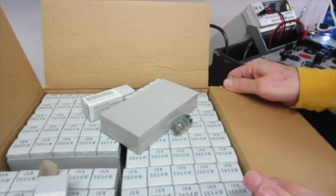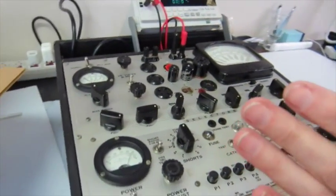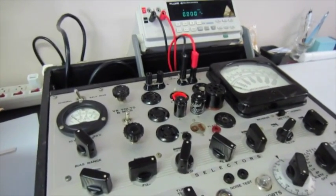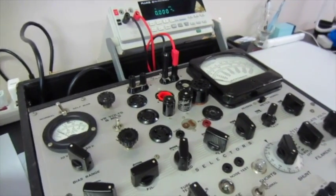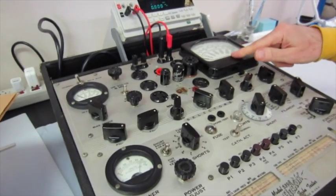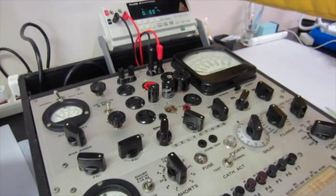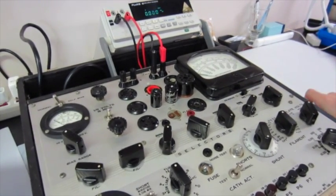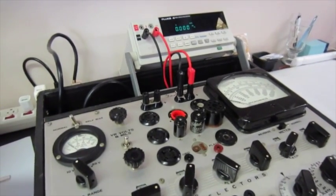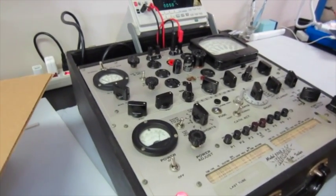So what I'll do in the next segment, because I've got to set this up, is show you how we would match them on the Hickok 539B. We'll do a shorts test, leakage test, gas test, go ahead and measure the GM, the mutual conductance or transconductance. And we'll verify that the plate current is within the range that we anticipate or expect for a tube. So let me come back in a few minutes after I've laid out the tubes and I'll show you how we actually test them, the quality checks.